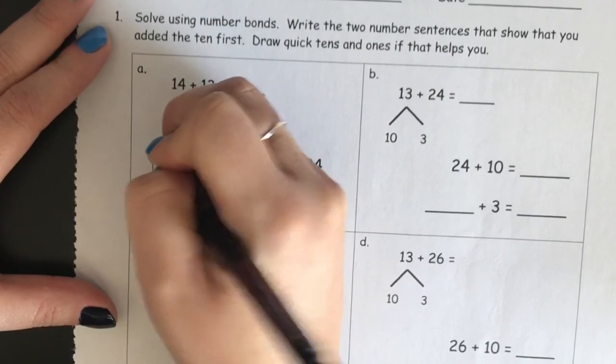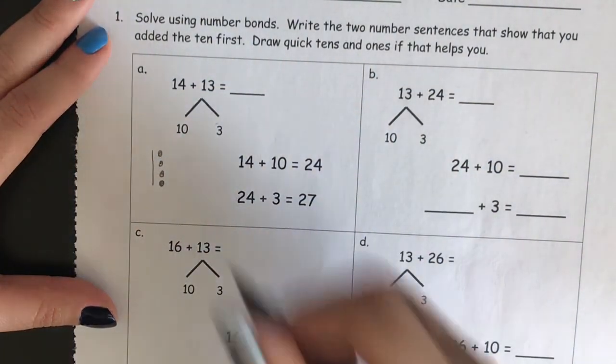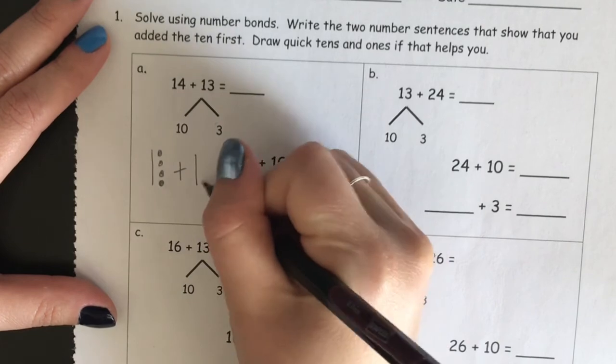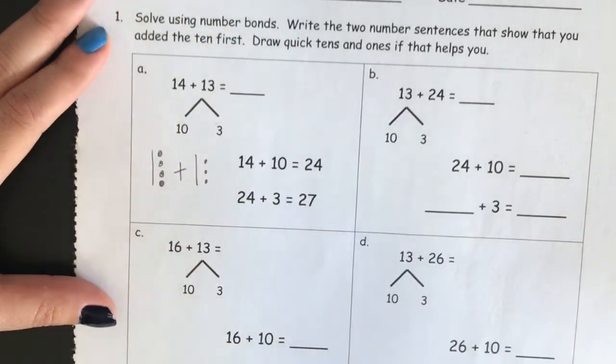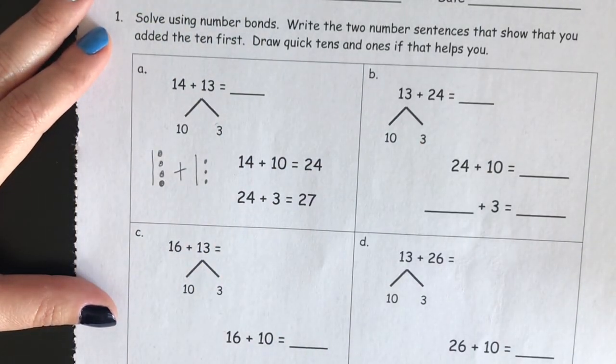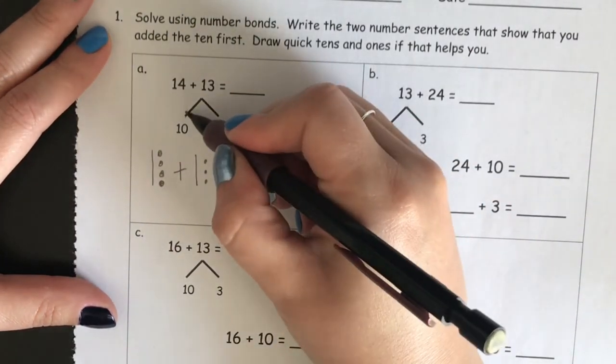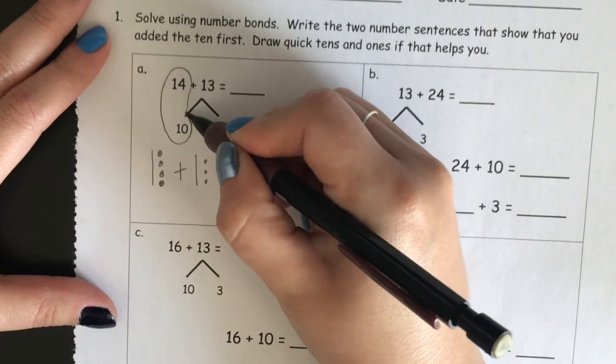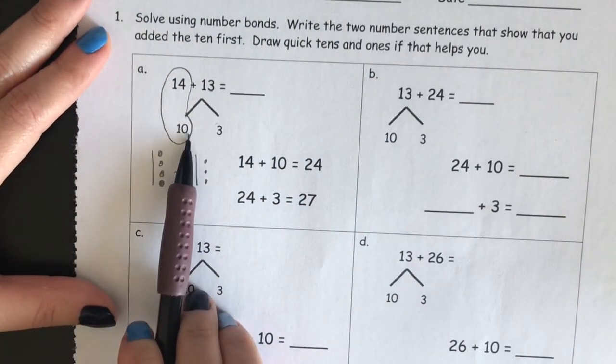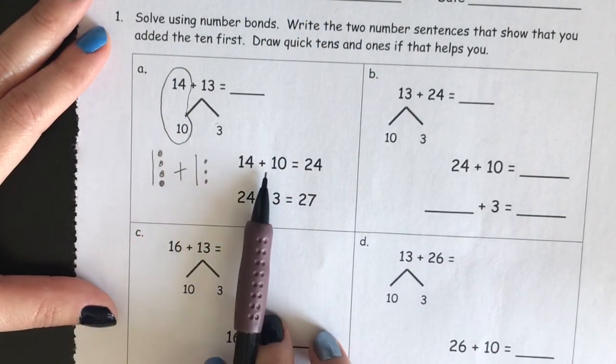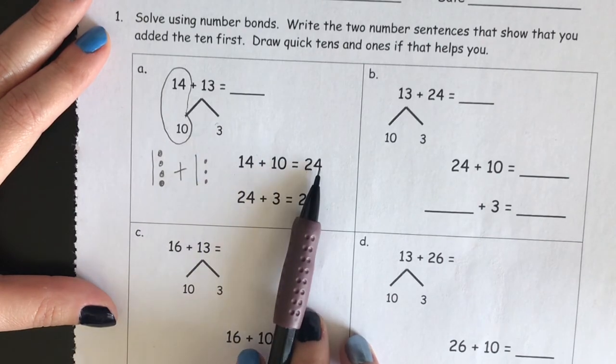I'm going to draw quick ten drawings, so that my brain sees what's going on as well. So, the first number sentence is fourteen plus thirteen. So, the first thing that we need to do is add the tens.